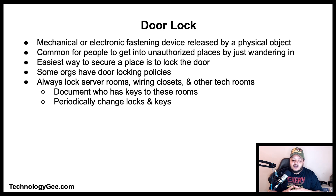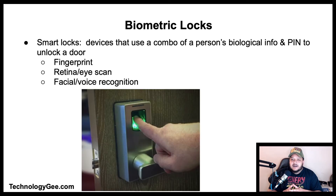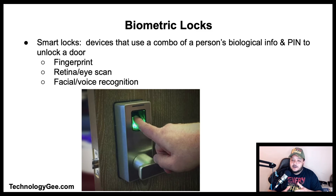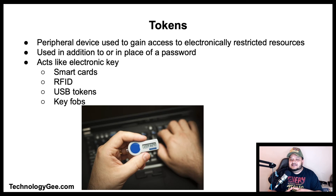Other precautions include documenting who has keys to the server room and wiring closets, and periodically changing out the locks and keys. Biometric locks and smart locks are devices that allow you to unlock doors using a combination of a person's biological information such as a fingerprint, retina or eye scan, facial or voice recognition, and also by supplying a PIN.